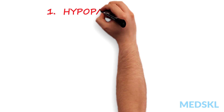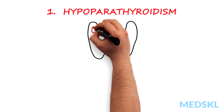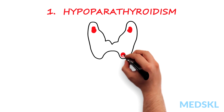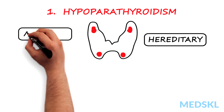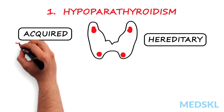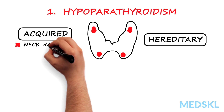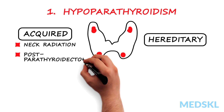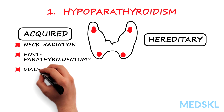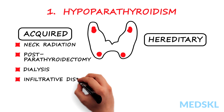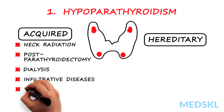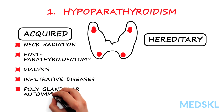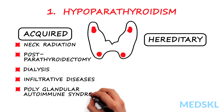Here are some conditions that you cannot miss. Hypoparathyroidism may be hereditary or acquired. Acquired causes include neck radiation, post-parathyroidectomy, dialysis, infiltrative diseases such as sarcoid, amyloid, and metastatic cancer, and polyglandular autoimmune syndrome.